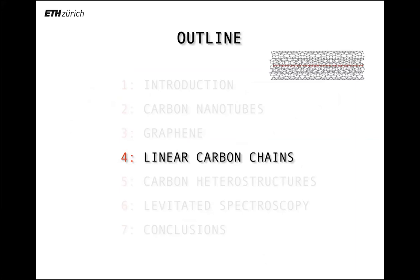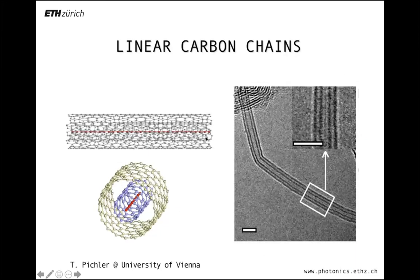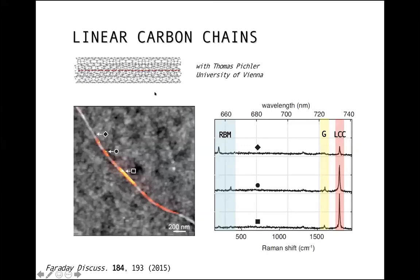Let me go to linear carbon chains. Linear carbon chains are just one line of carbon. Chemists tried to synthesize this for a long time. They manage, but this beast falls apart when you have about 20 to 30 carbons. It was Thomas Pichler who managed to grow these linear chains inside nanotubes. This can be grown to a length of several hundred nanometers. There's evidence from the TEM. You see this line here, and this is assumed to be a linear carbon chain.